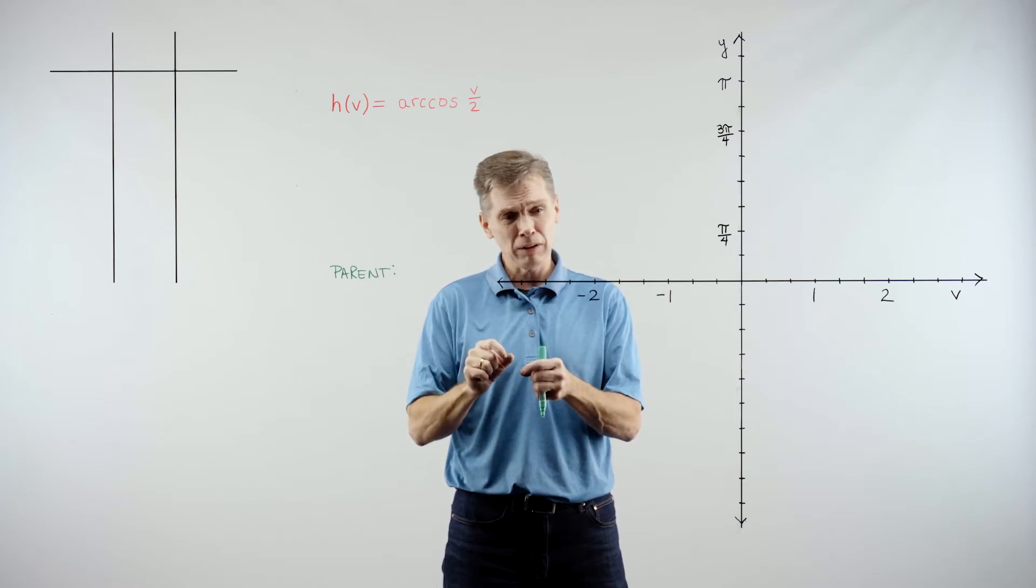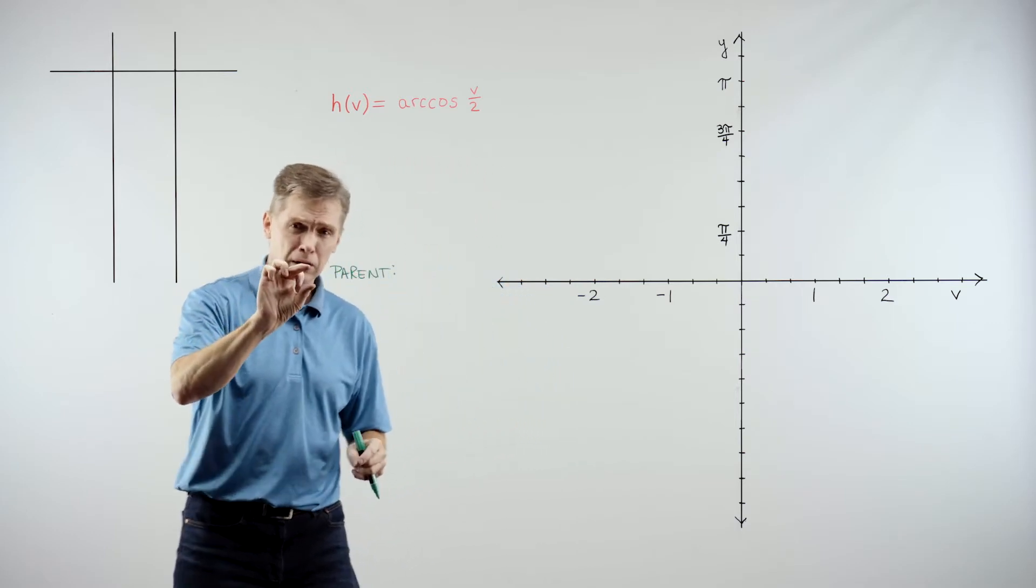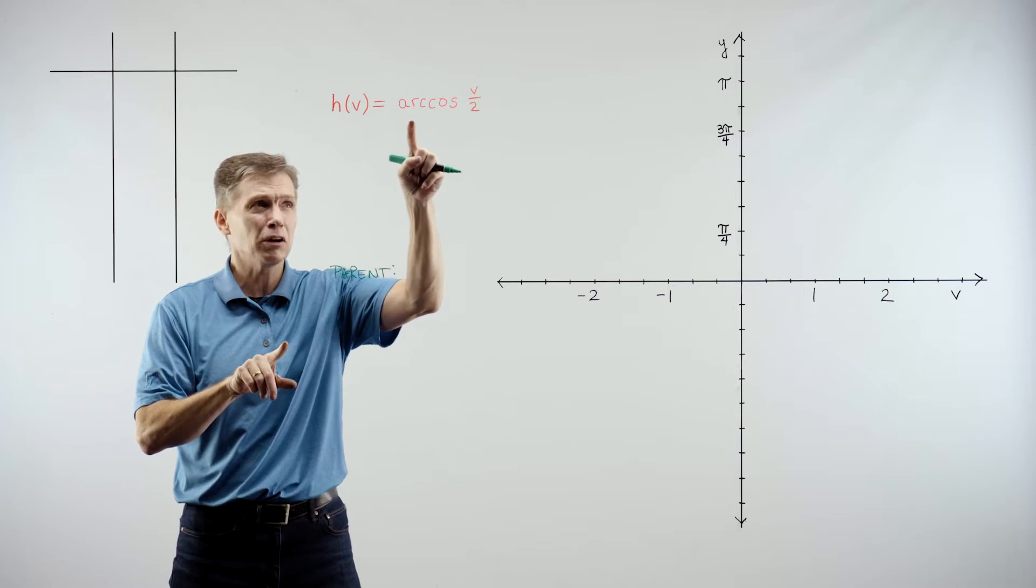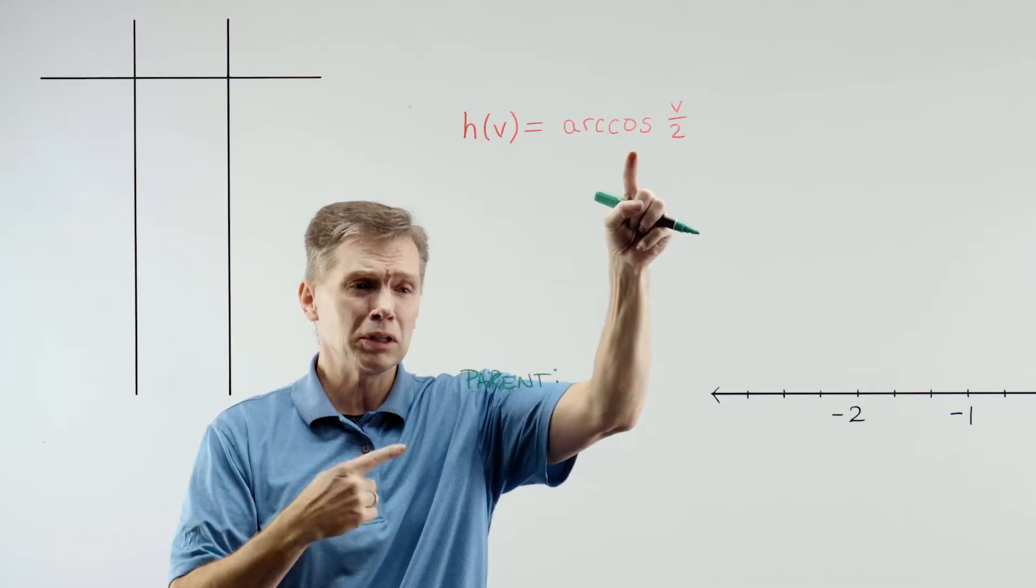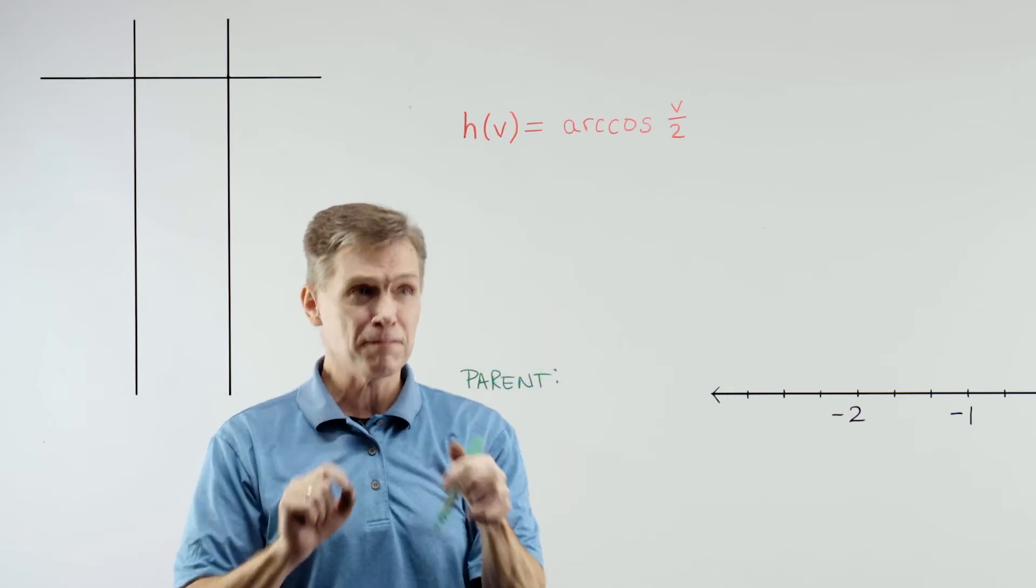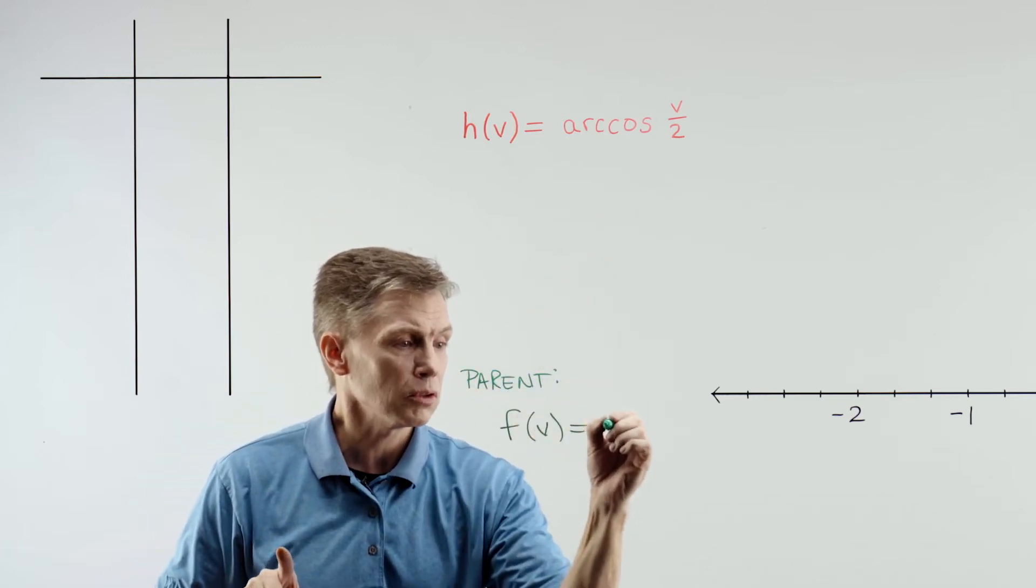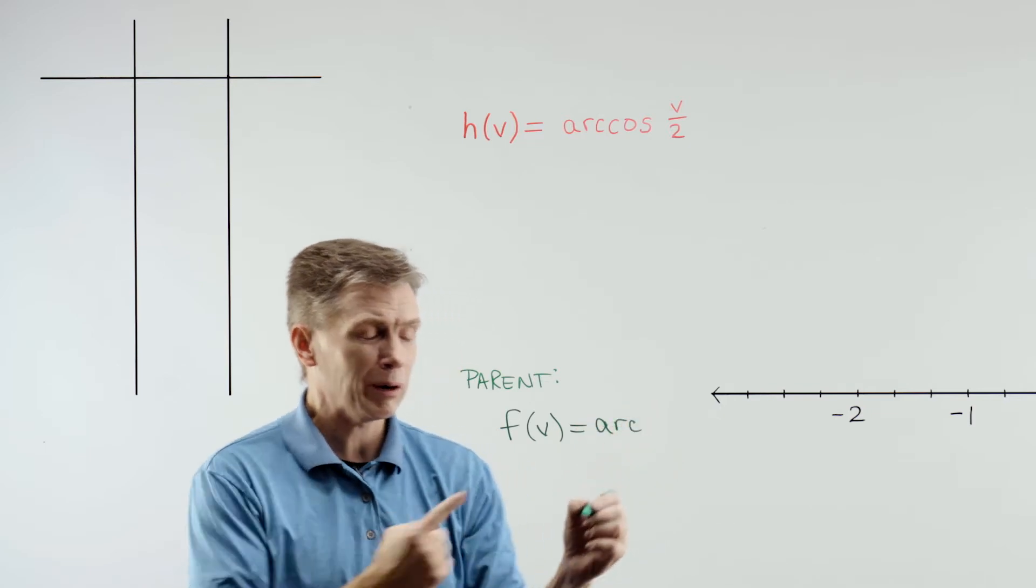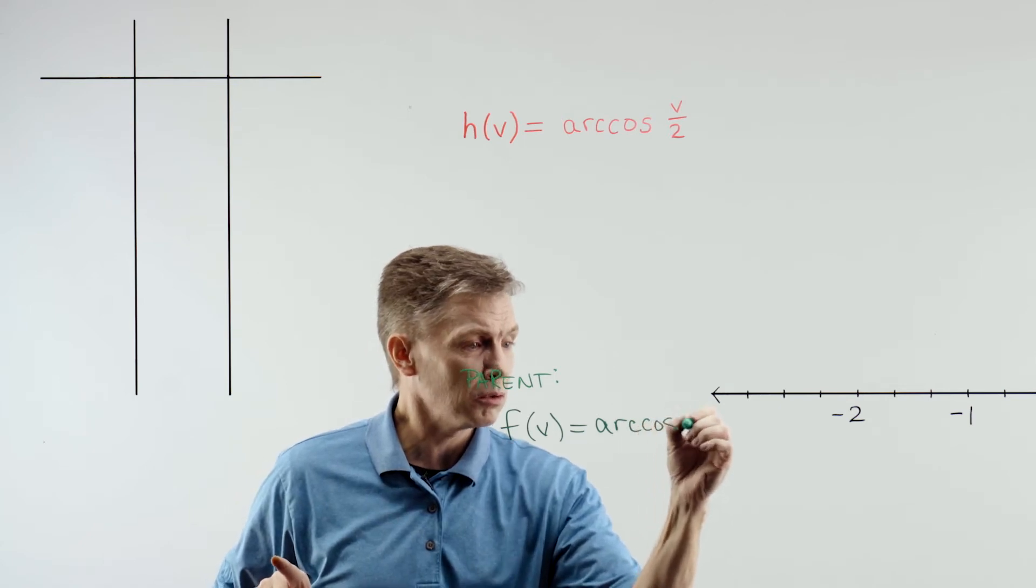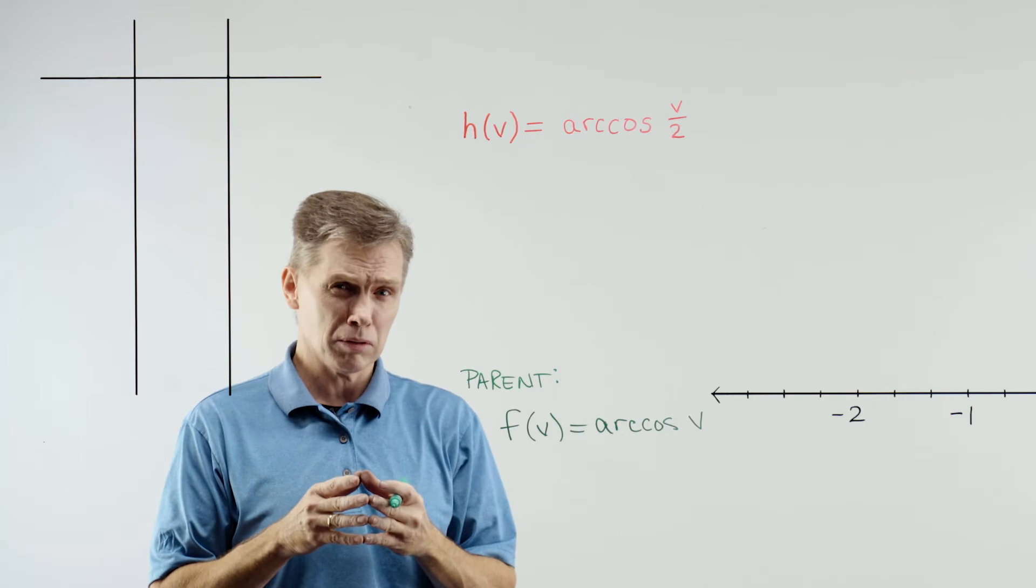Let's start by getting a handle on the parent function and even what that graph looks like. The parent function in this case, I hope it's fairly clear that it's arc cosine, because the only extra complication is that v divided by 2, but the main function is going to be the arc cosine. So, let's make our f of v, or whatever you'd want to call it, equal to arc cosine of just v. And that'll be my parent function.